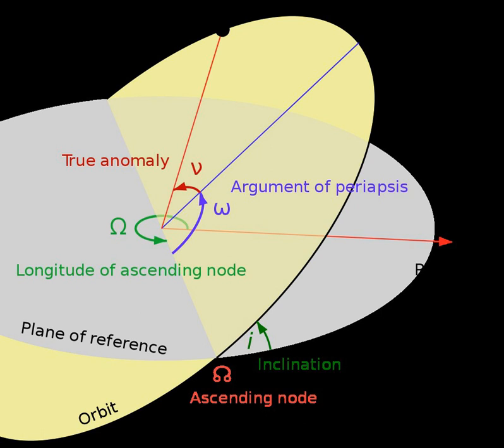Adding the argument of periapsis to the longitude of the ascending node gives the longitude of the periapsis. However, especially in discussions of binary stars and exoplanets, the terms longitude of periapsis or longitude of periastron are often used synonymously with argument of periapsis.